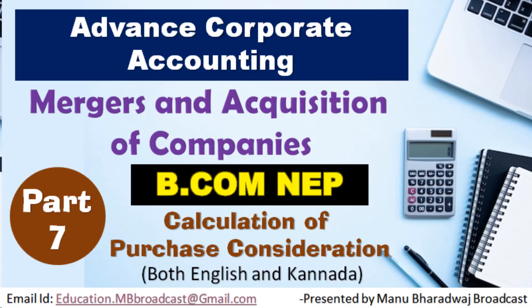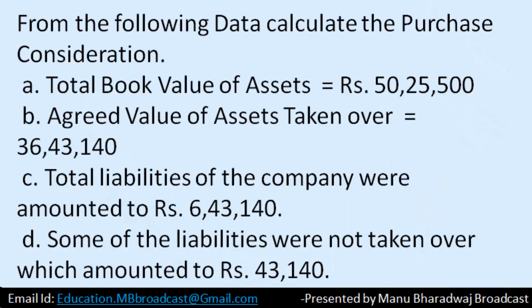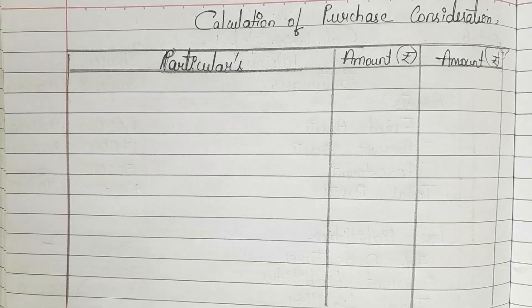Hello everyone, welcome to this video. In today's video, let us see how to calculate purchase consideration. The question is on the screen — kindly take a screenshot. From the following data, calculate the purchase consideration. Total book value of assets is 50,25,500. Agreed value of assets taken over is 36,43,140. Total liabilities of the company amounted to rupees 6,43,140. Some of the liabilities were not taken over, which amounted to rupees 43,140.